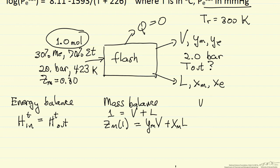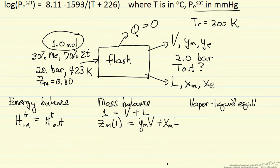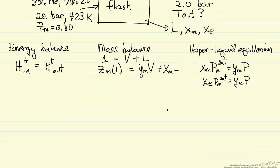The third thing we're going to need is vapor-liquid equilibrium. Because we have this mixture and it's an ideal solution, the mole fractions are going to be modeled by Raoult's law. So we say the mole fraction of methanol in the liquid phase times the saturation pressure of methanol at the outlet temperature T_out equals the mole fraction in the vapor phase times the pressure out, which is two bar. We have the same type of equation for ethanol.